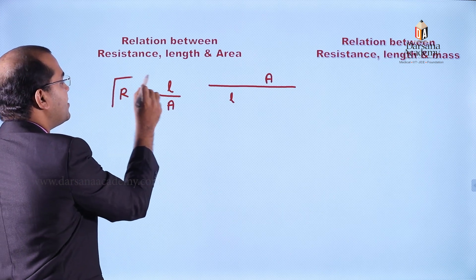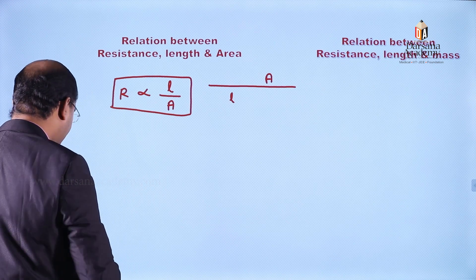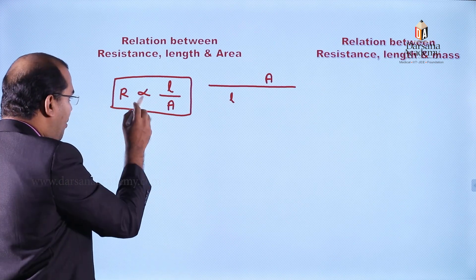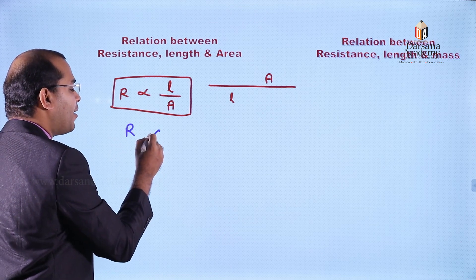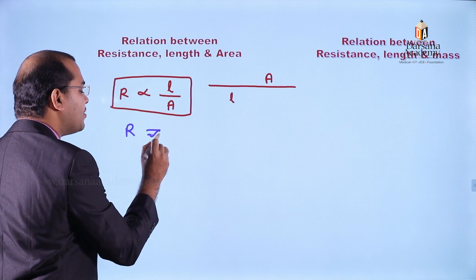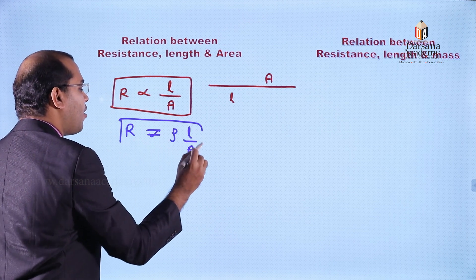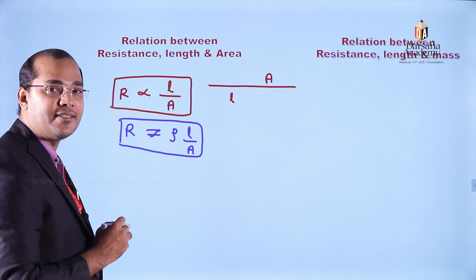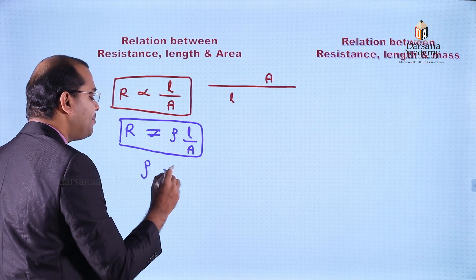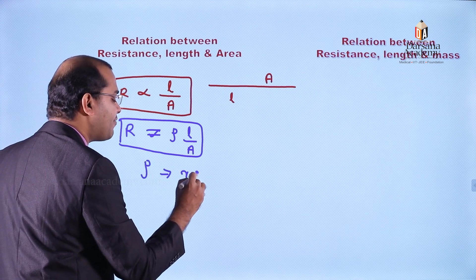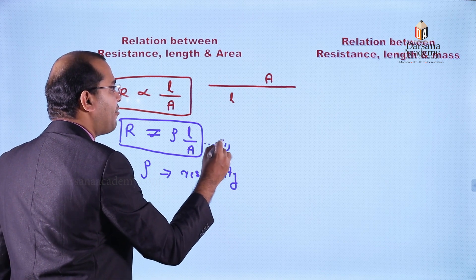That is the relationship between resistance, length, and area of cross section of the wire. We introduce the constant resistivity, so R is equal to ρ into L divided by A. That ρ is known as resistivity or specific resistance. This is equation 1.